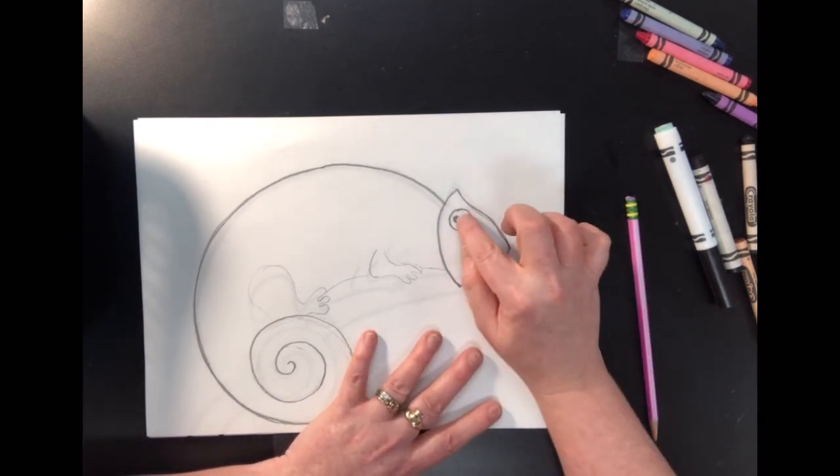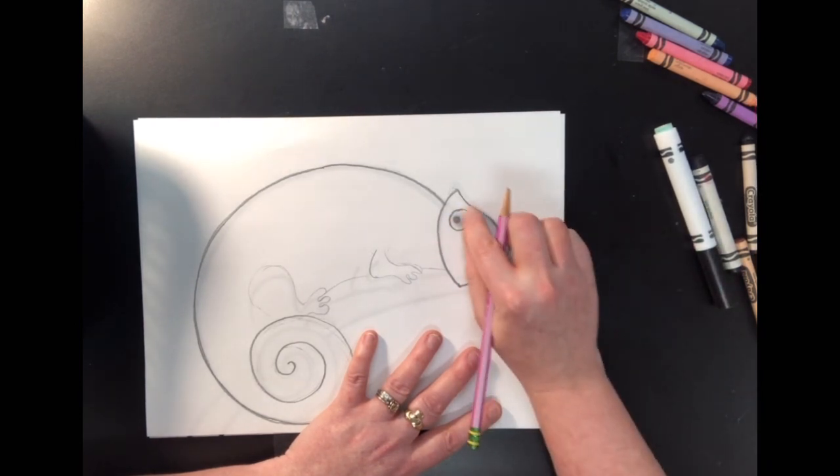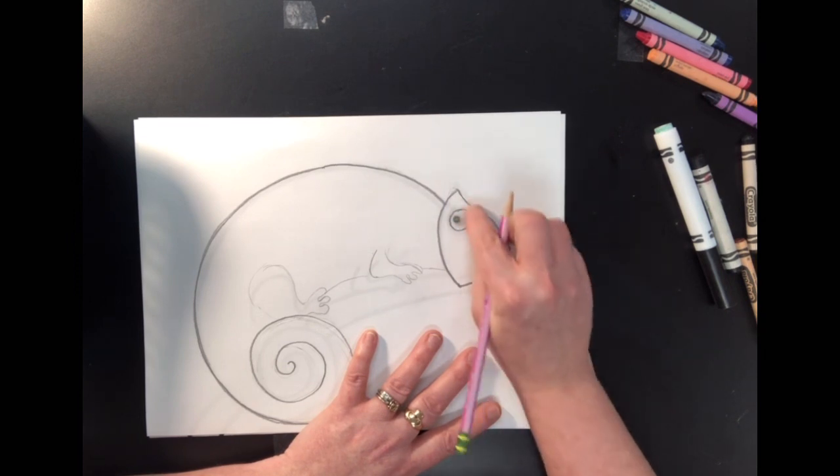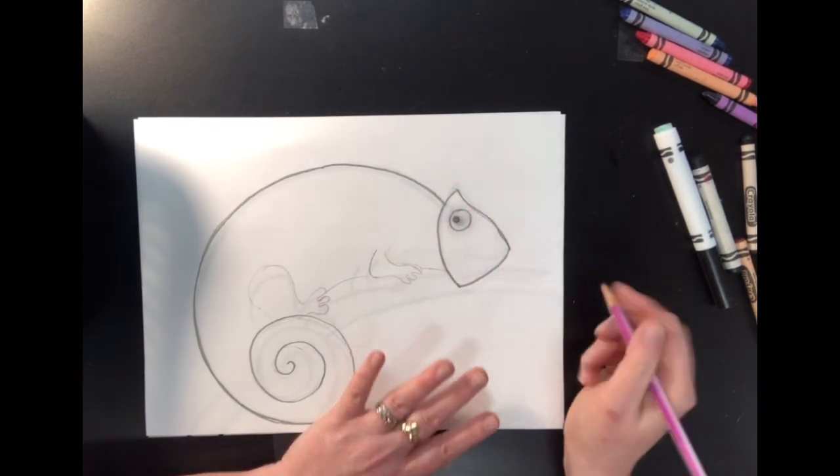And one of the things I love to do to make it look realistic is I just rub it a little bit, give it a little bit of a shadow around it, blend it in, make it look like a real eye.